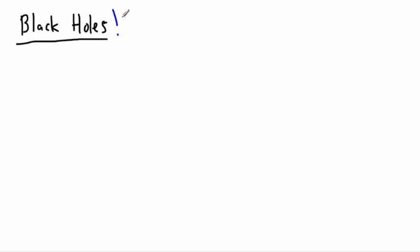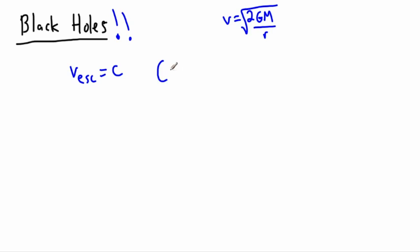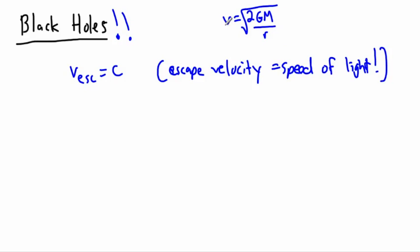Of course we also have things called black holes — these are very very interesting and we could do a whole series of videos on them. A black hole is an object where the escape velocity, which was the square root of 2GM/r, just happens to equal the speed of light. It's something where the mass is so large or its radius is so small that the escape velocity is actually the speed of light.